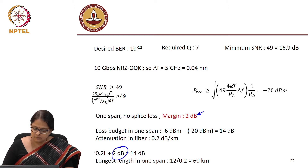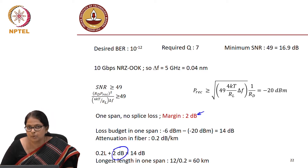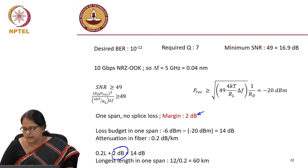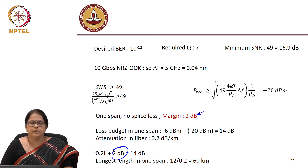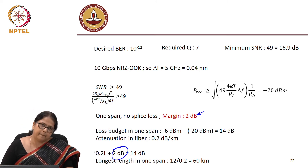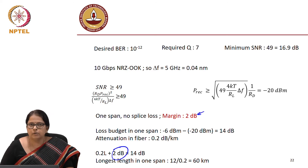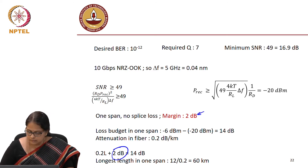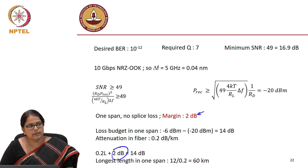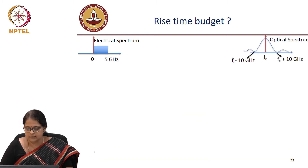It became 12 because we added a loss margin. Last time we had not added that, so we had got 70 kilometers; now it has become 60 kilometers because we added a loss margin of 2 dB. So the longest length in one span is 60 kilometers now.